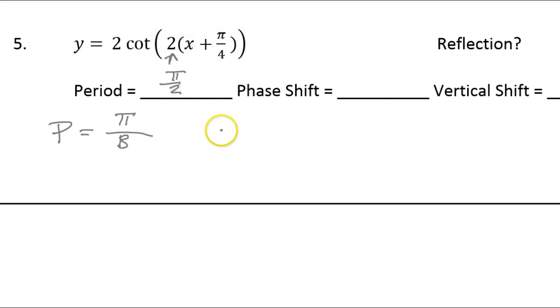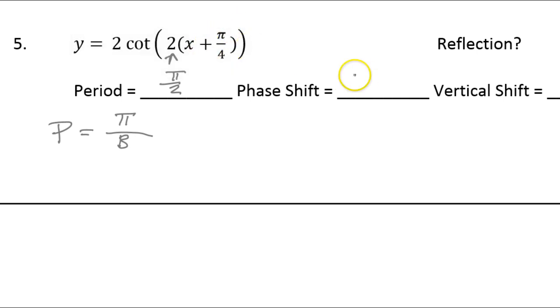So that's pi over 2. The phase shift is left pi over 4 — I'm going to write negative pi over 4, just to be redundant about it.